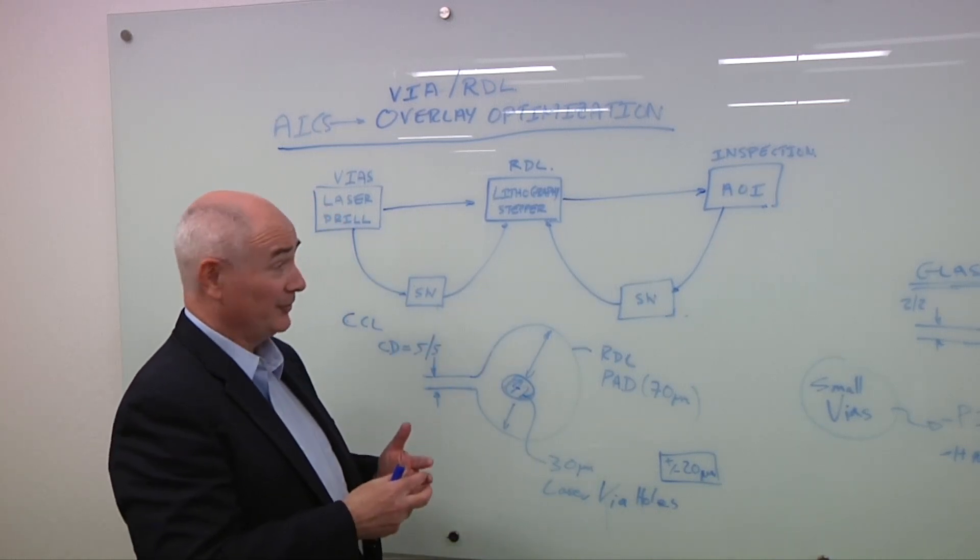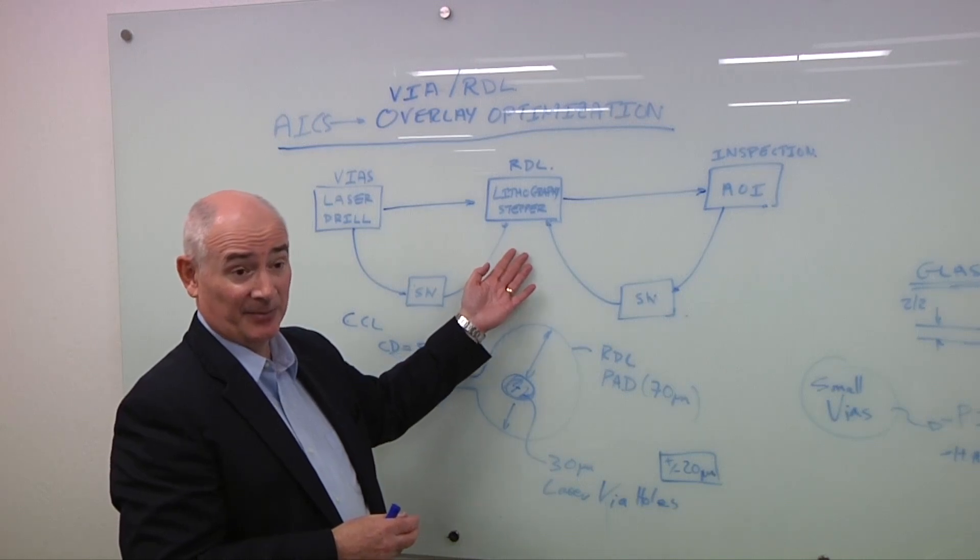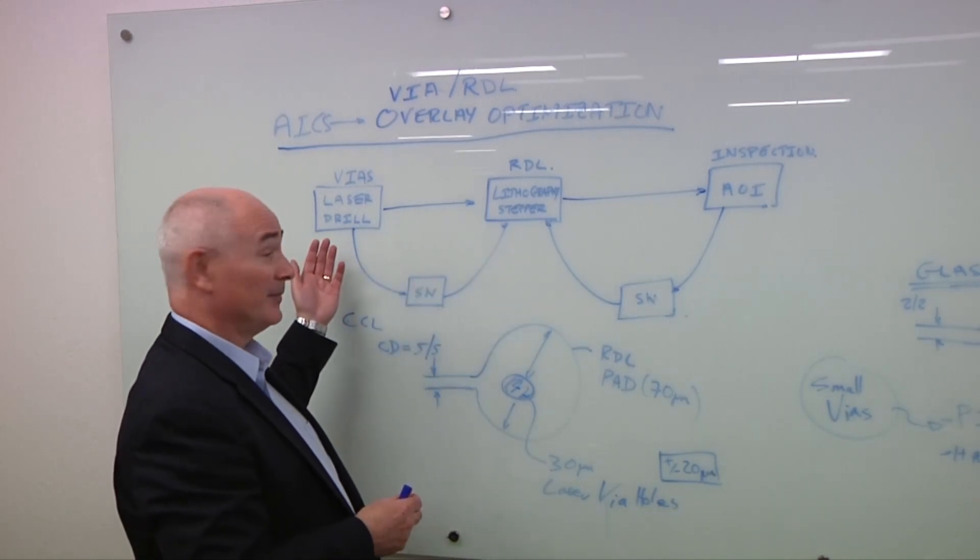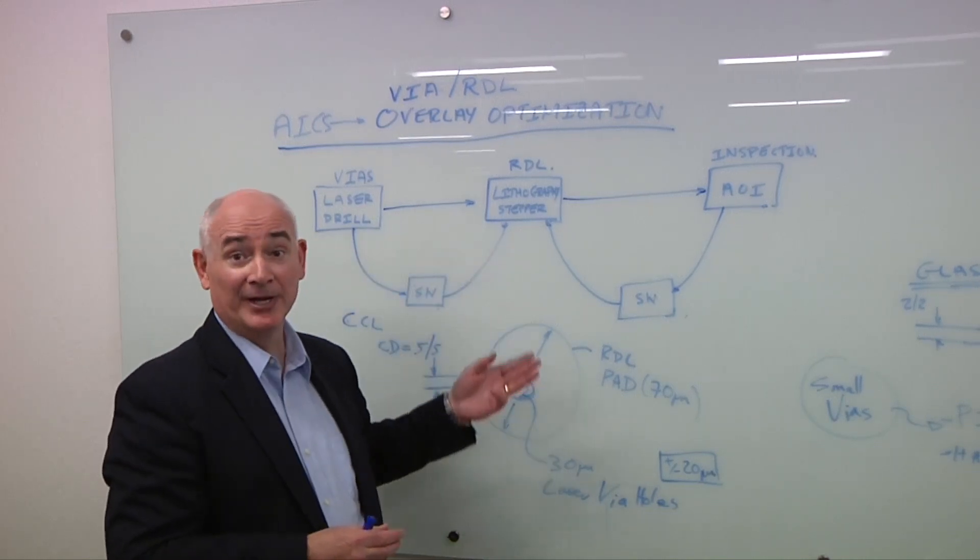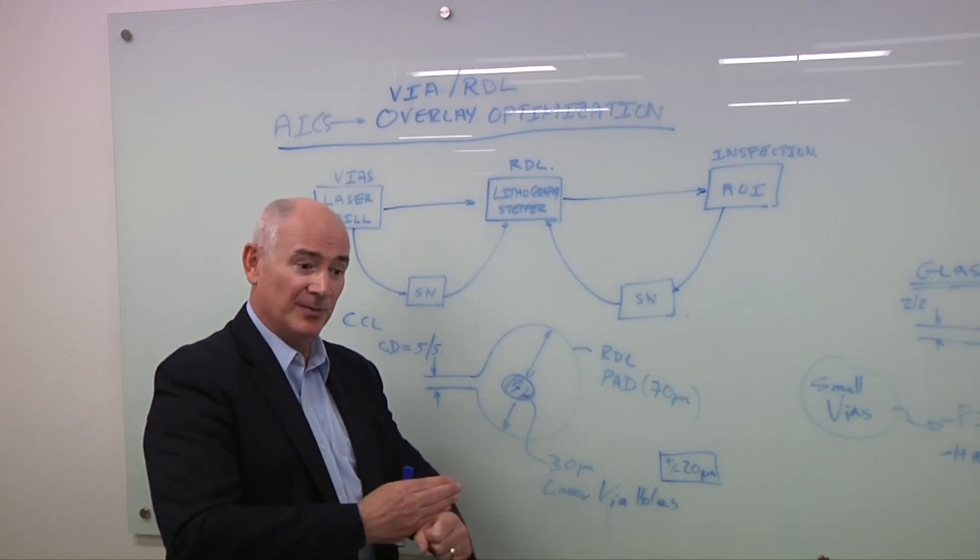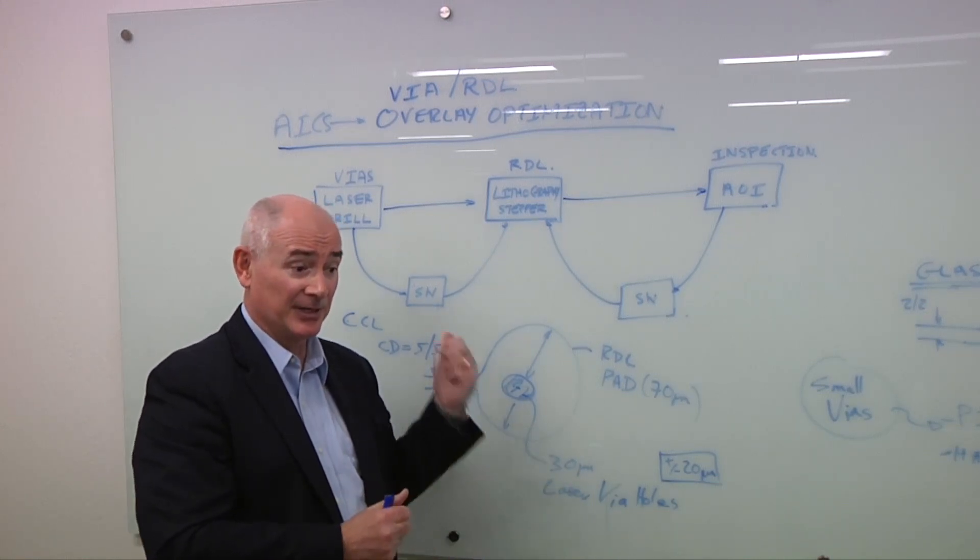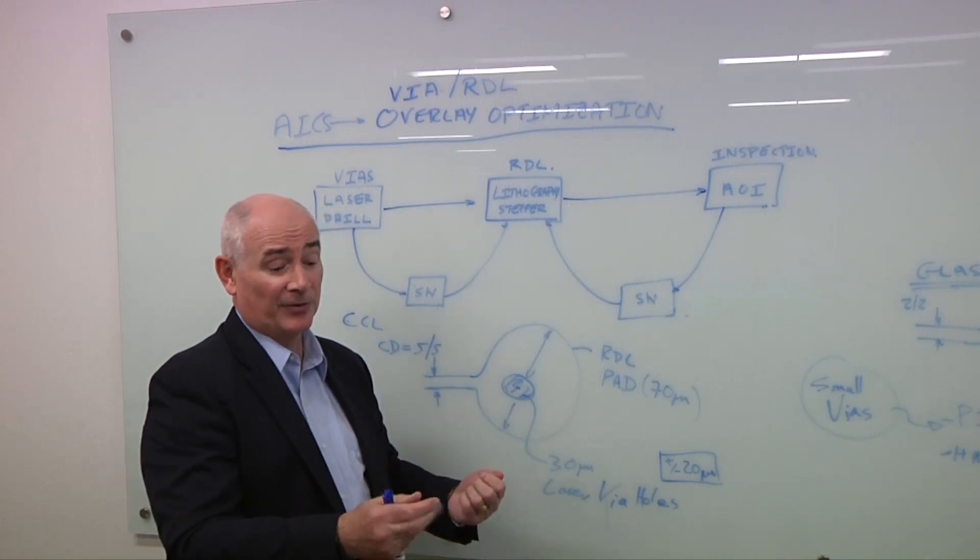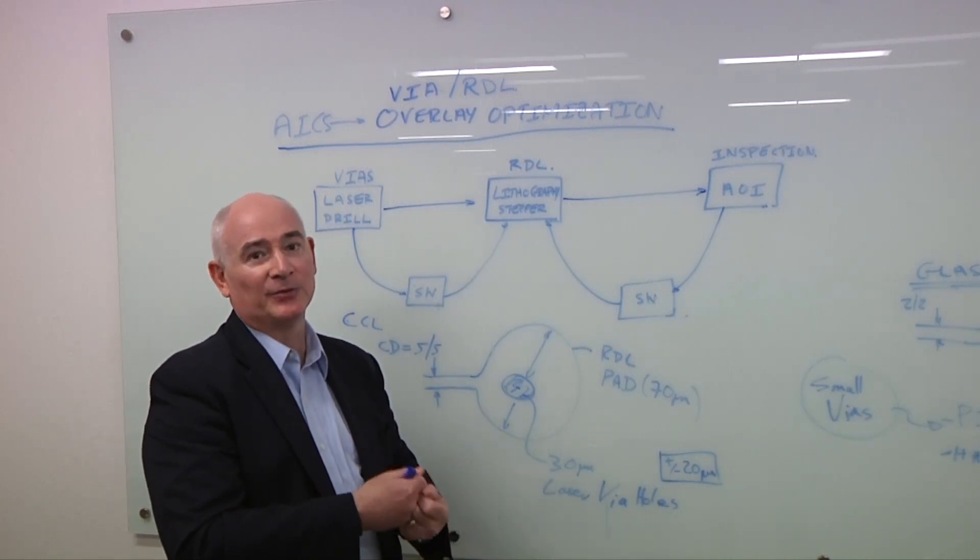But of course, if you can't do that and you're relying on your stepper to try and get better performance, I think being able to communicate between the laser-drilled tool and the stepper would really help. In fact, you could actually match the two grids together. If you knew the grid or the stage performance and orthogonality and scaling of the laser tool and have the same grid of the stepper, feedforward information would be a lot easier.